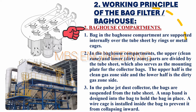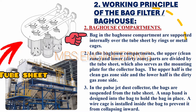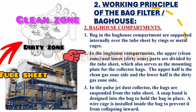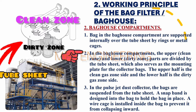Step 2 — Bag House Compartments: The bag in the bag house compartment is supported internally over the tube sheet by rings or metal cages. In the bag house compartments, the upper clean zone and lower dirty zone are divided by the tube sheet, which also serves as the mounting plate for the collector bags. The upper half is the clean gas zone side and the lower half is the dirty gas zone side.